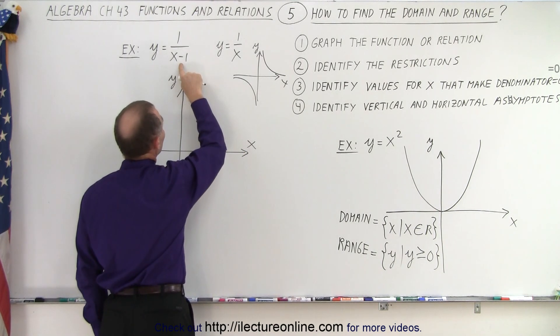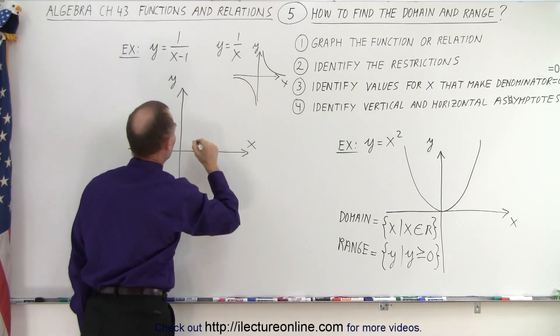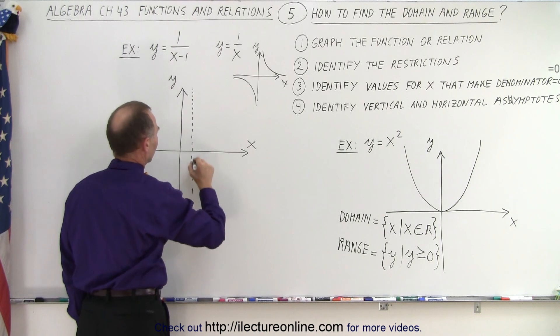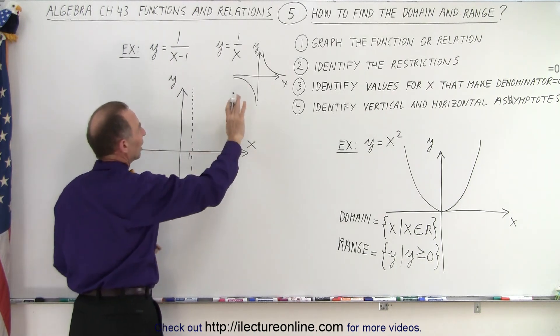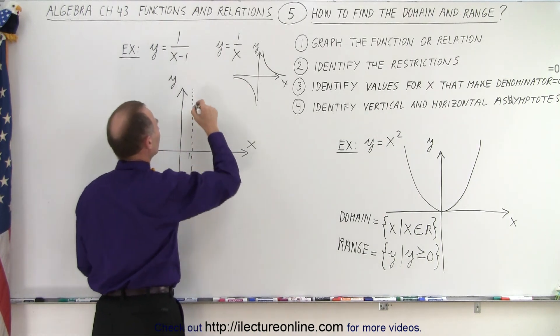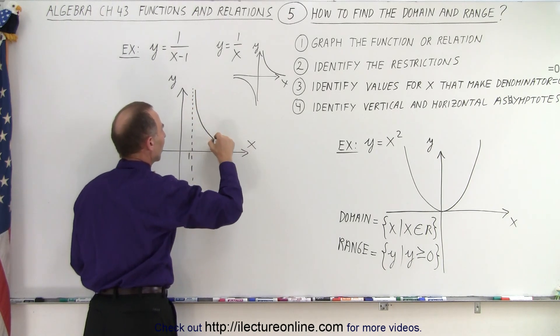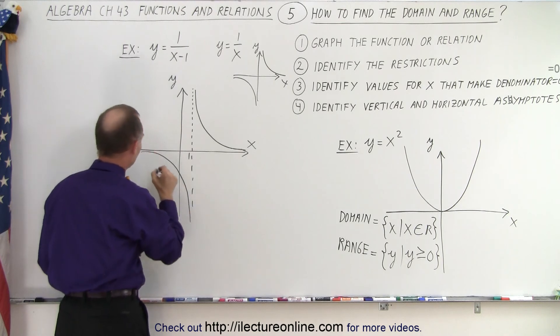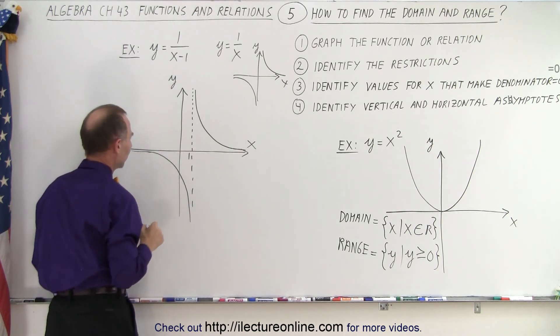But, if we now have this here, this simply means that the function is moved to the right by one unit, so we can draw a vertical line, like this. This is where x equals 1, so it takes the whole function, and it moves it to the right by one unit, so this is what this looks like, and this is what it looks like over on this side.